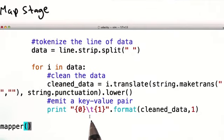Then for each word, we emit a key value pair. The word itself and the number one. Note that the key value pair is separated by a tab.